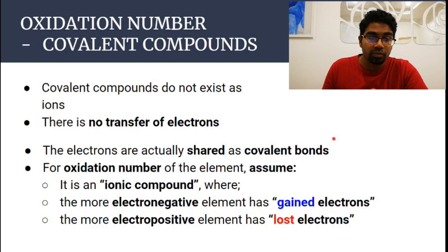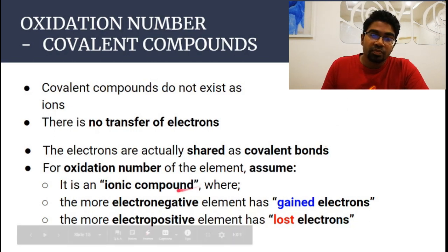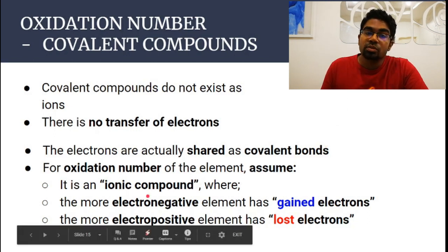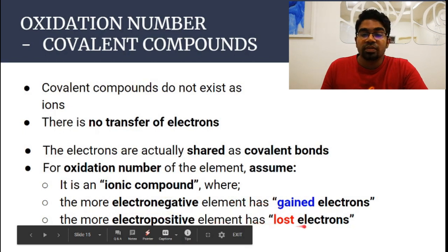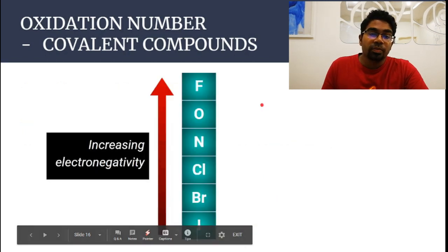This charge — how we assign it — is based on a set of rules. First of all, we assume it is an ionic compound where the more electronegative element has gained the electrons and the more electropositive element has lost electrons.